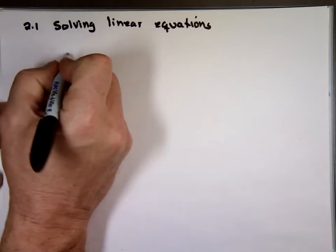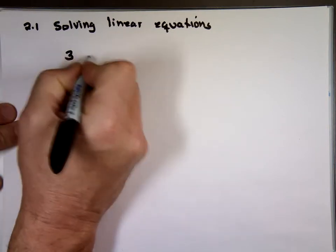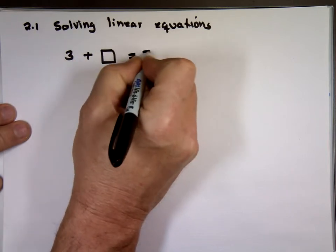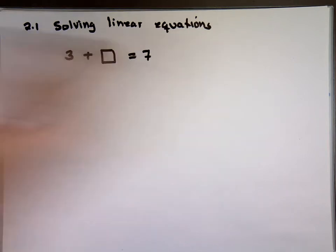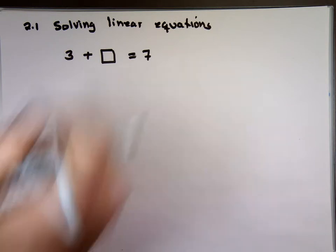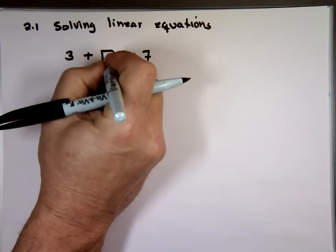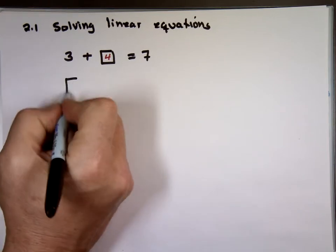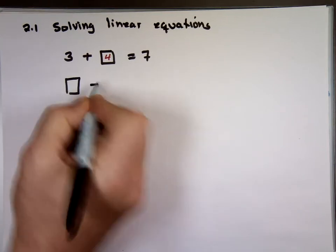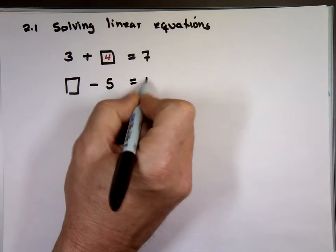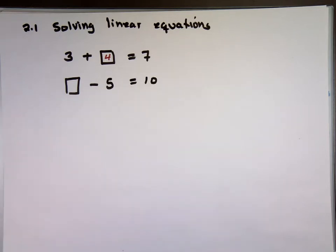If I said to you, 3 plus what is equal to 7? The answer is 4, so you have to put a 4 in the box. A box: what minus 5 is equal to 10? 15.